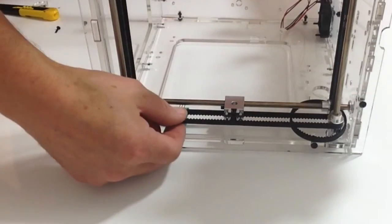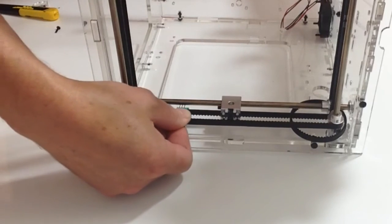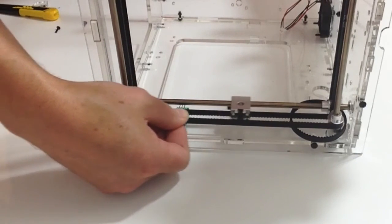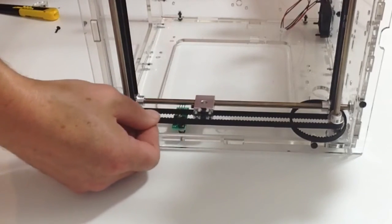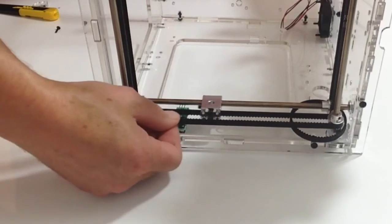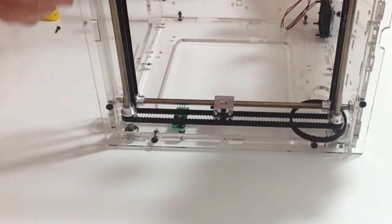Now as you can see we have that part in position and as you can see when you move it backwards and forwards using the belts it will move into position. In the next stage we will be doing exactly the same for the other side.